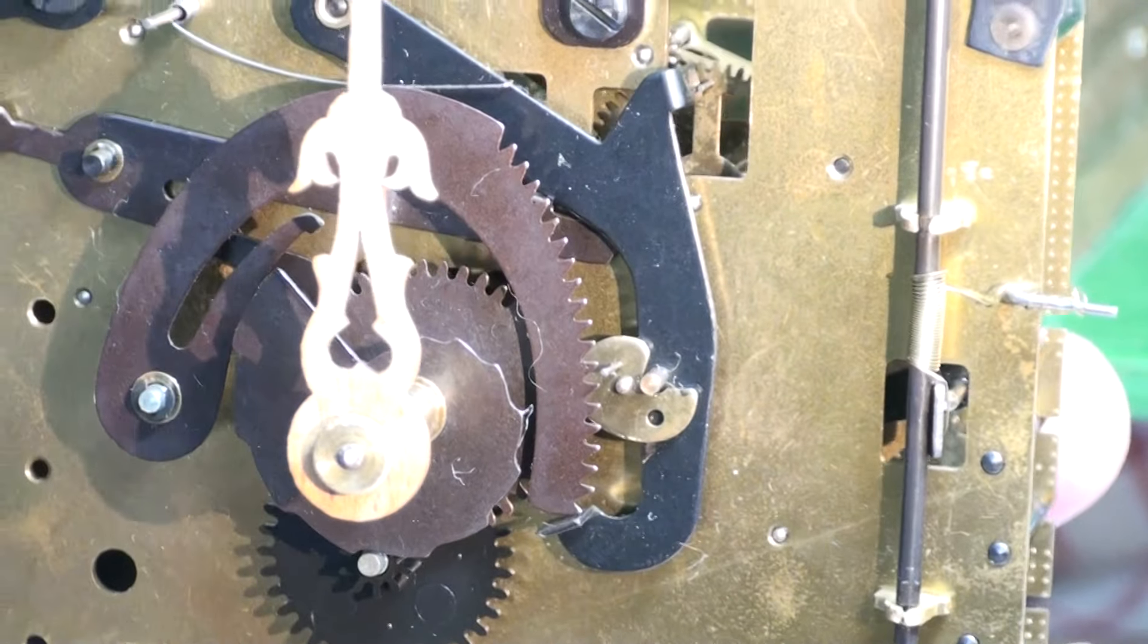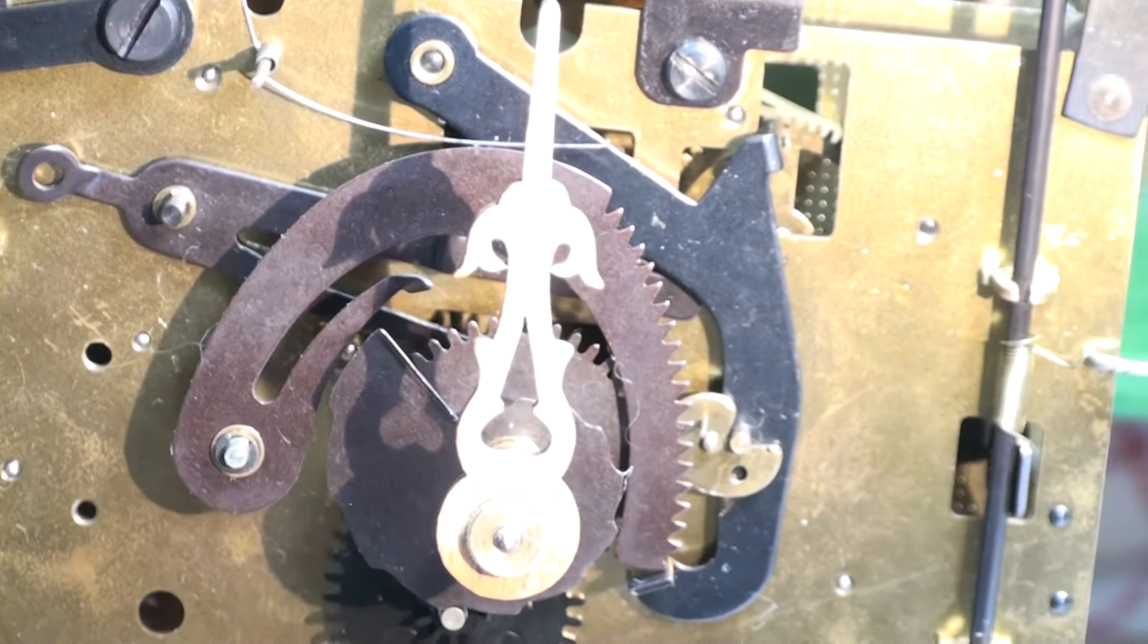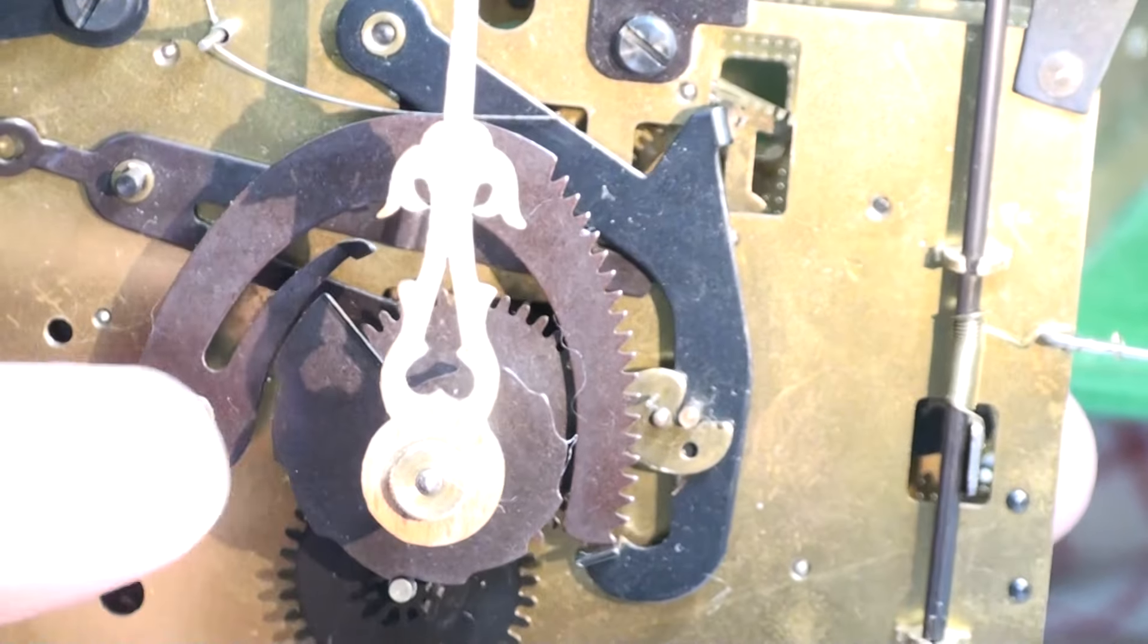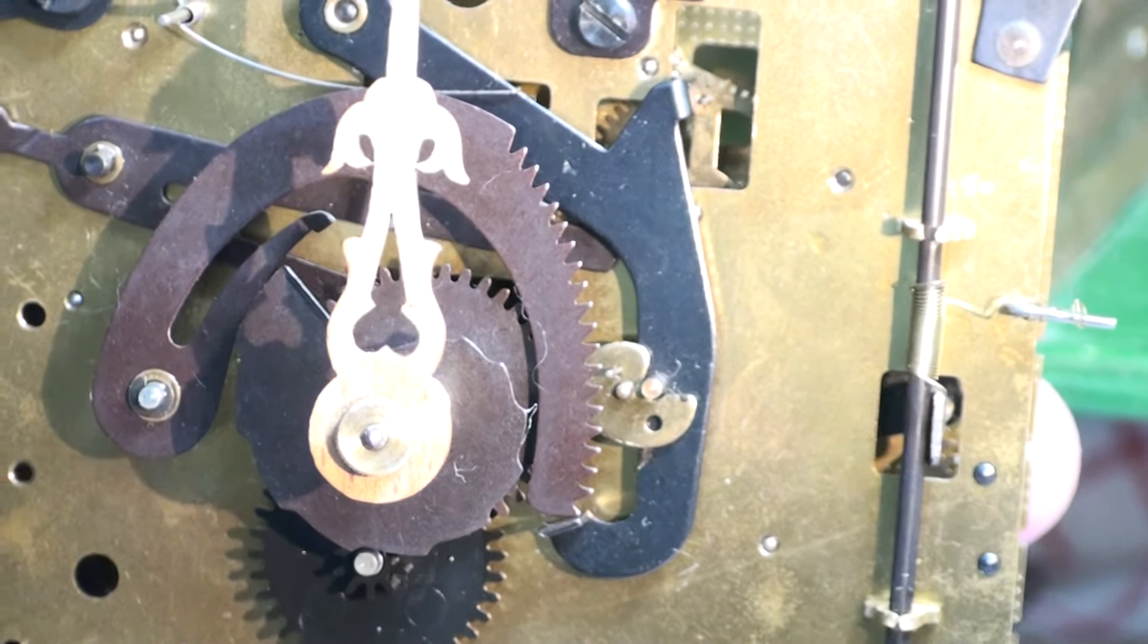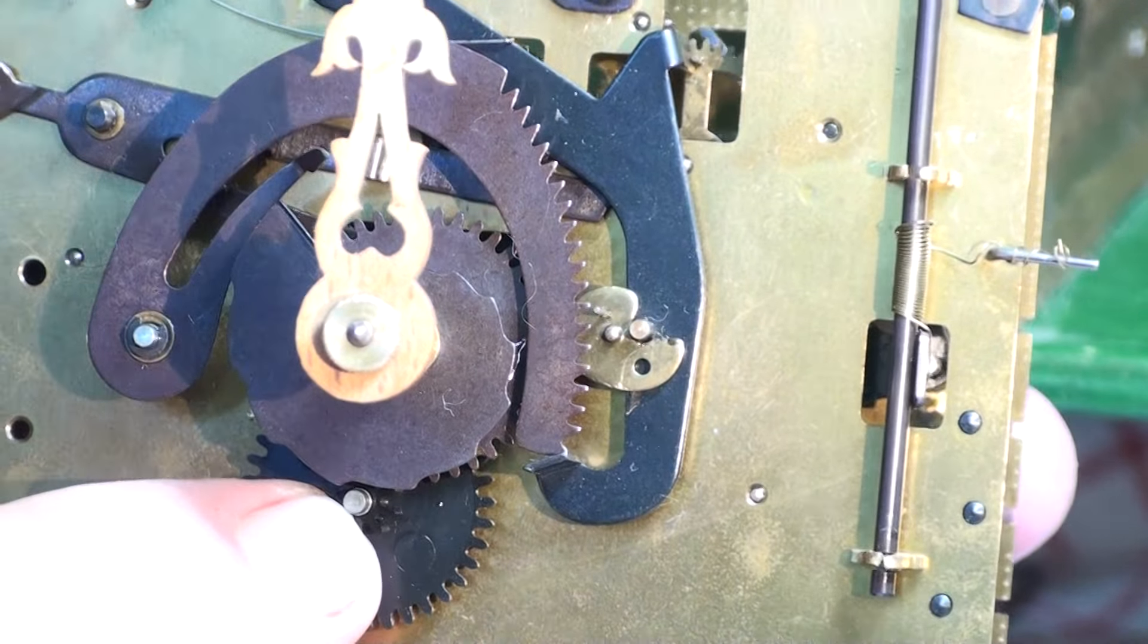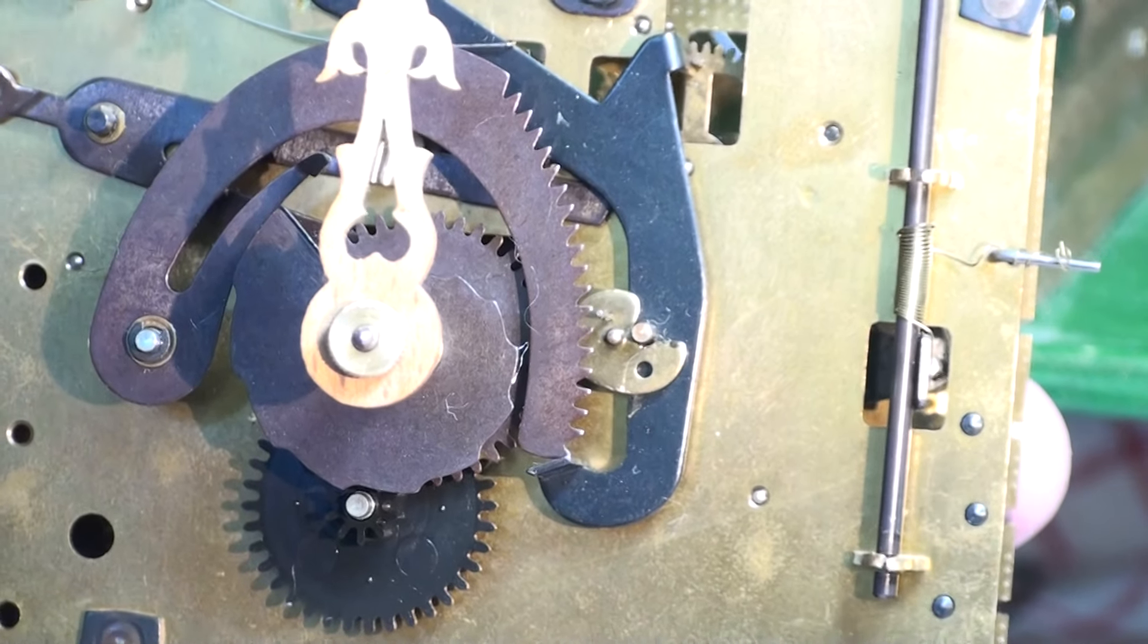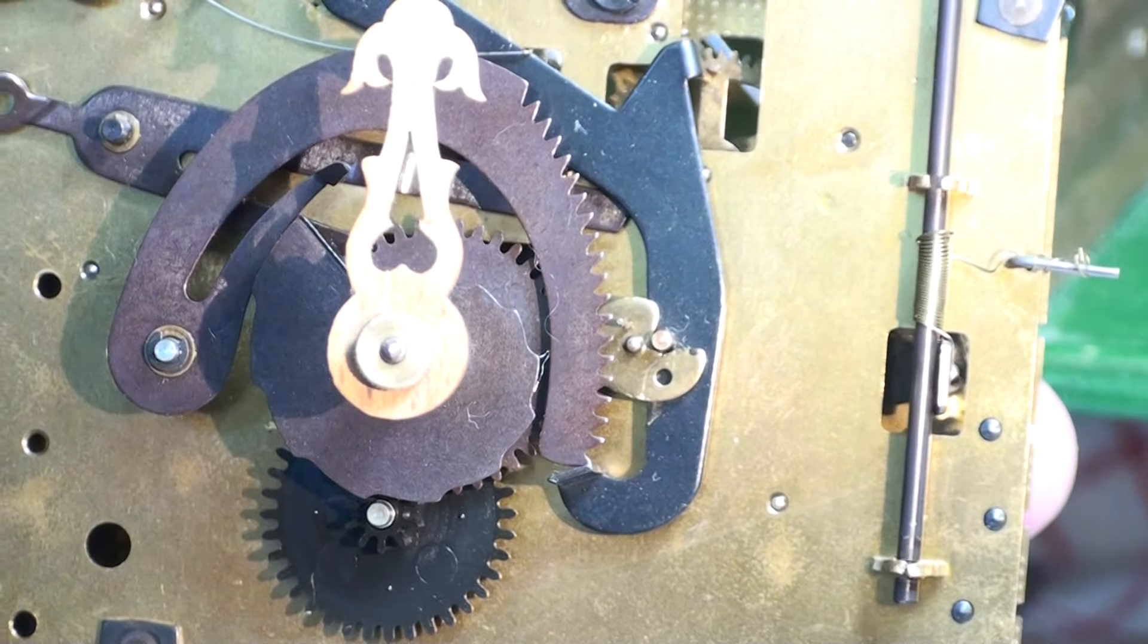So as far as I know, I fixed the clock when it comes to actually setting where it needs to set and it shouldn't be getting stuck anymore. So let me go ahead and get my washers back on there and hang the clock up and let it run again.